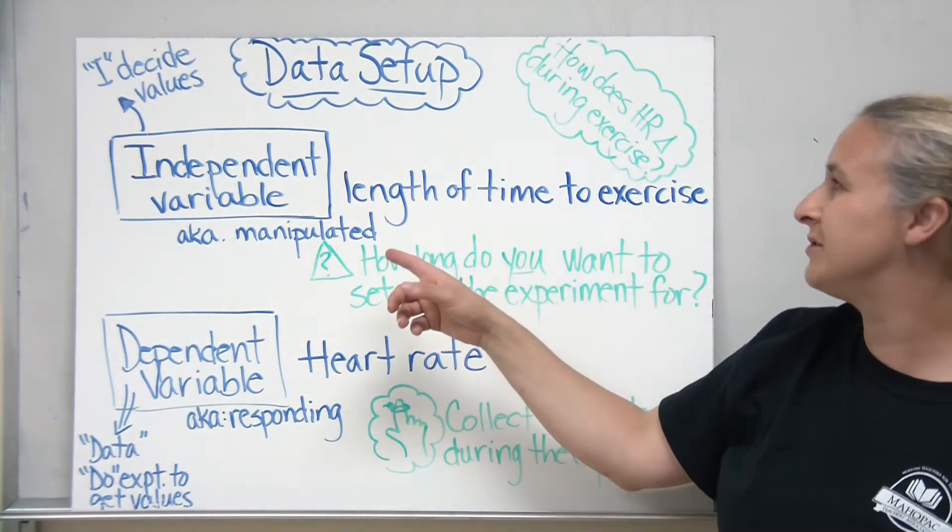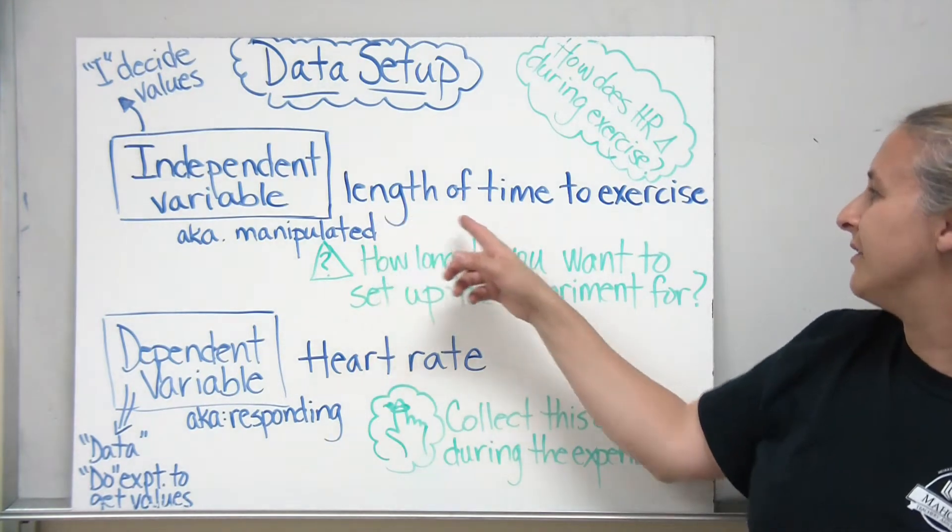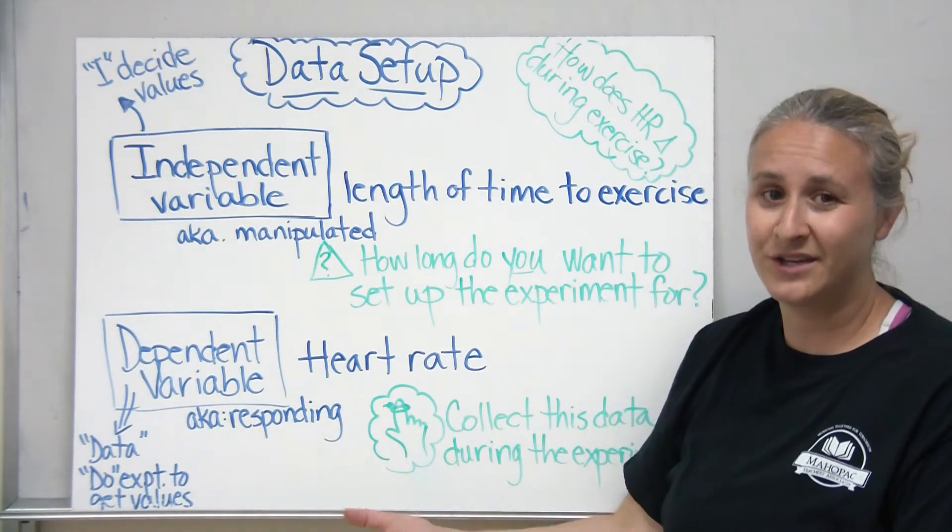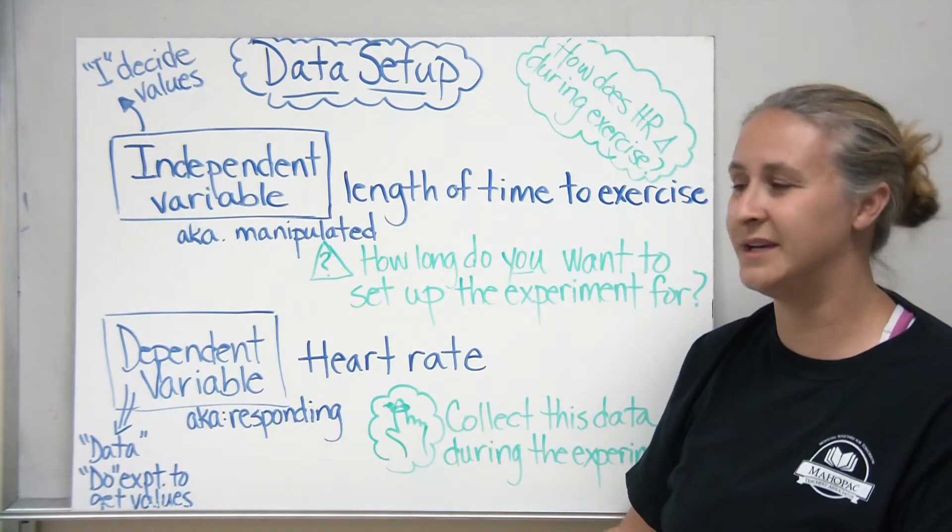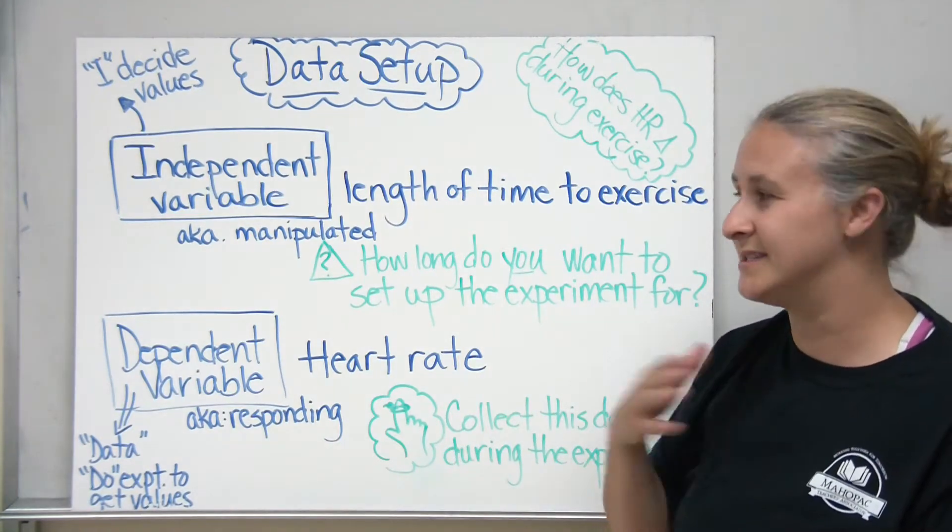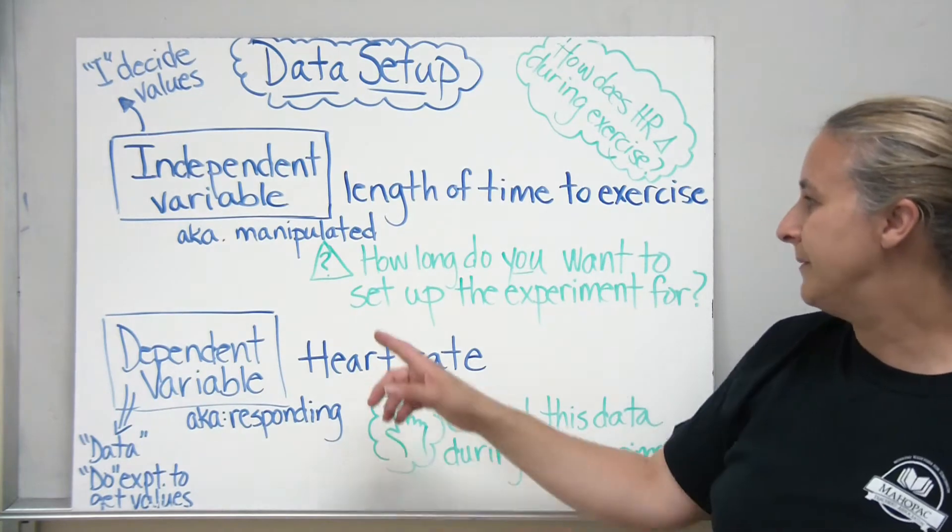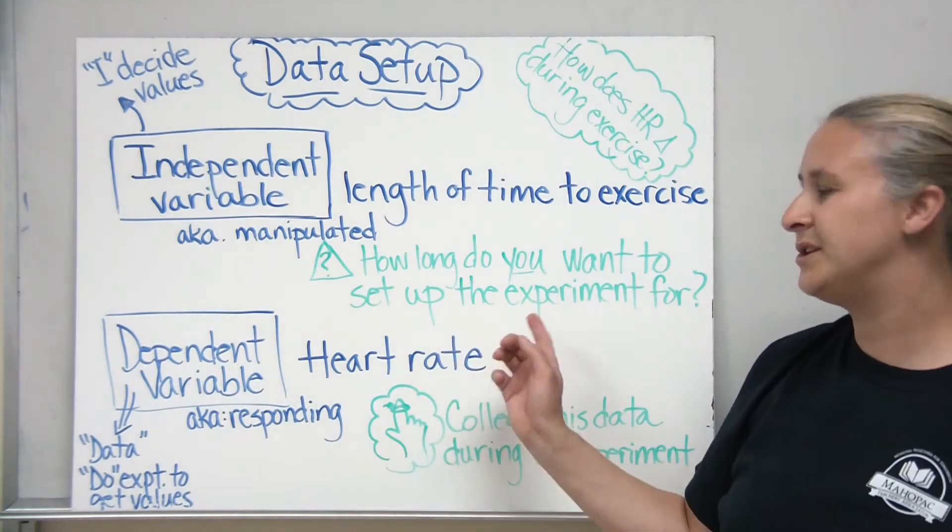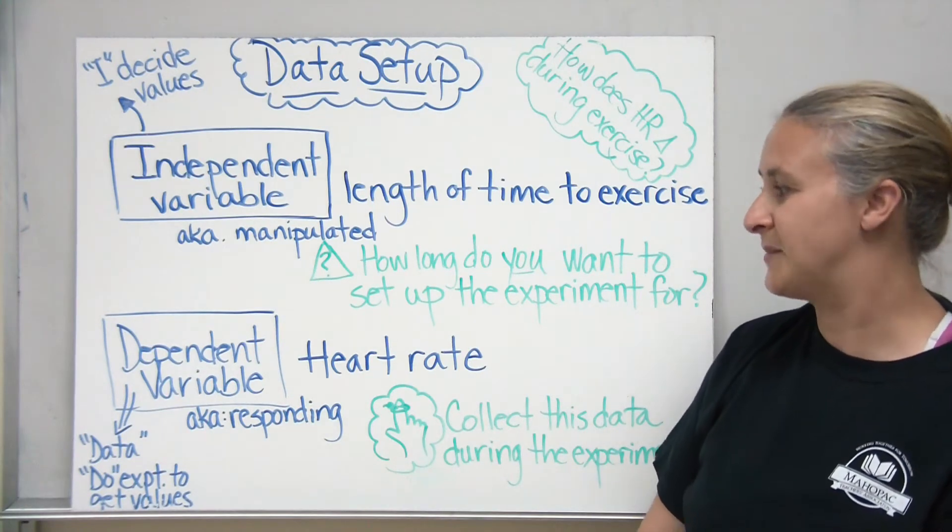So in our example we used before, how does heart rate change during exercise, the length of time to exercise is what I decided during my experiment. I could change the length of time. I could make it an hour, I could make it five minutes, but I get to decide that data. We can also call this variable the manipulated variable. So the one question you might think to yourself is how long do you want to set up the experiment for? You decide that before your experiment starts.